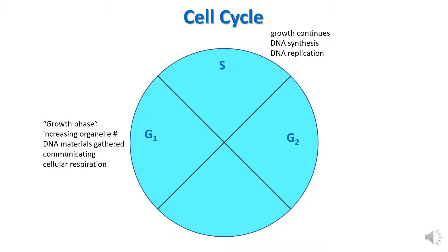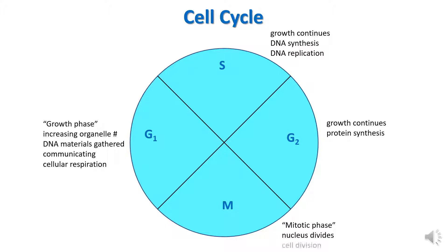The third phase is G2, and during this phase there is a continuation of growth, but the cell is getting ready to divide, so among the things it's doing is duplicating organelles. It's also producing a variety of proteins that will help guide the cell through the division process. The last phase of the cell cycle is the M stage, also called the mitotic phase, where first the nucleus divides, then the cell itself divides.